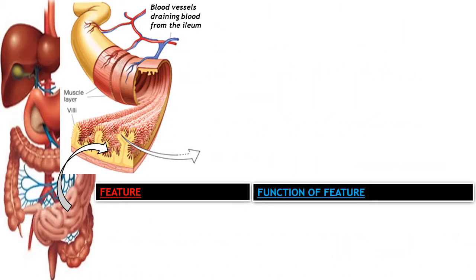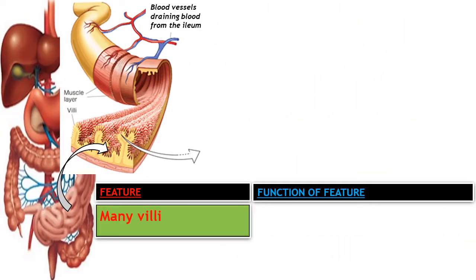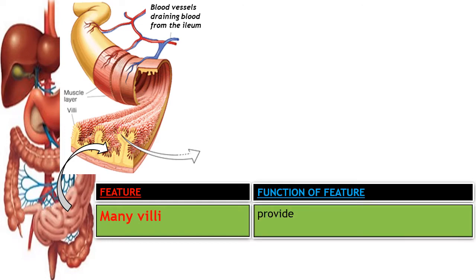Number three: a very important feature — the ileum has numerous villi. Numerous villi provide a large surface area for absorption of the end products of digestion, including glucose, fructose, fatty acids, and glycerol.